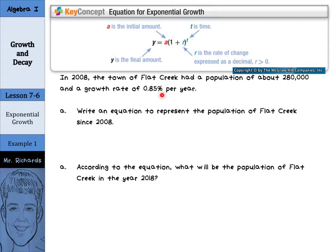Well, we can start off with y, which is our final amount. We can say that is going to equal a, which is our initial amount, and that was 280,000, times the quantity 1 plus our rate. We'll start off at 0.0085 to the t power for years.